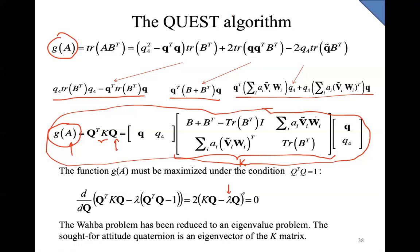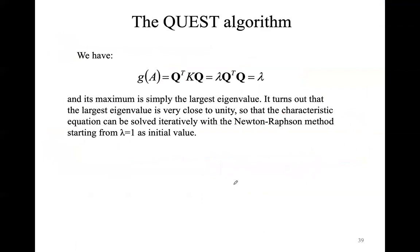We have to find the quaternion that solves this eigenvalue problem. So the maximization of G(A) results in the solution of an eigenvalue problem. Up to this slide, although it is called the QUEST algorithm, it is based on Davenport's Q-method. Both Davenport's Q-method and the QUEST algorithm are based on the solution of this eigenvalue problem. The only difference between the two is how they solve it. The QUEST algorithm provides a more efficient method to determine these eigenvalues.